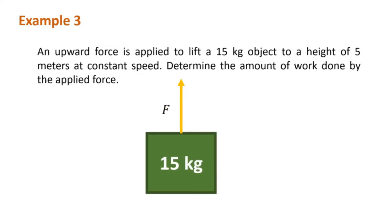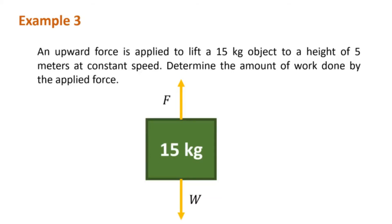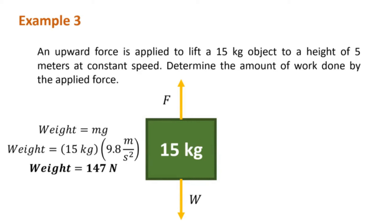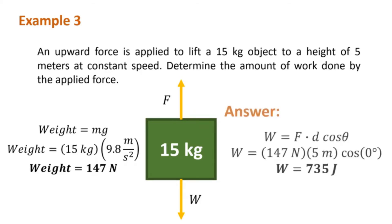An upward force is applied to lift a 15-kilogram object to a height of 5 meters at constant speed. Determine the amount of work done by the applied force. First, determine the applied force: recalling our lesson about balanced forces, the force equal to this upward force is the weight of the object. Writing weight equals mass times gravity, we substitute 15 kilograms for mass and 9.8 meters per second squared for gravity, giving a weight of 147 newtons, which also equals the force. Now to calculate work, substitute 147 newtons as the force, 5 meters for the displacement, and an angle of zero since both the force and the displacement are in the same direction.